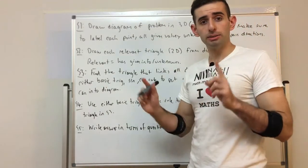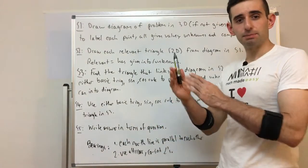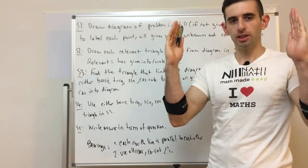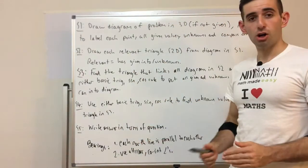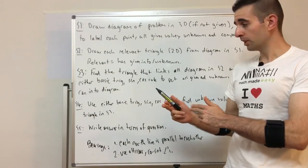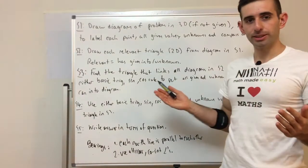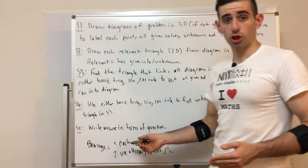So just some notes about bearings. When we have bearings, every north line is parallel to each other because the direction north is parallel to itself. So that means if we have multiple north lines we can use our alternate angles, corresponding angles, or co-interior angles from geometry. As you see, pretty much trigonometry is a combination of geometry as well. So don't forget we need to use basic geometry to help us.